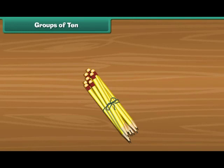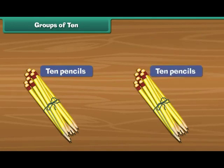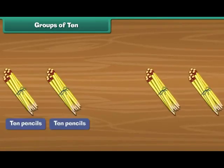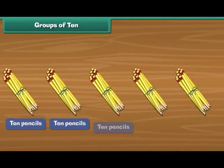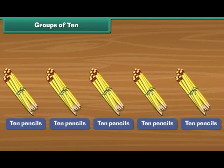Groups of 10. Look at this bundle of pencils — there are 10 pencils in this bundle. A collection of 10 objects is called 10s. Here is one more bundle; there are 10 pencils in it as well. Therefore we have two 10s. Here are some more bundles of pencils; each bundle has 10 pencils. Let us count: 3, 4, 5. Therefore we have five 10s.